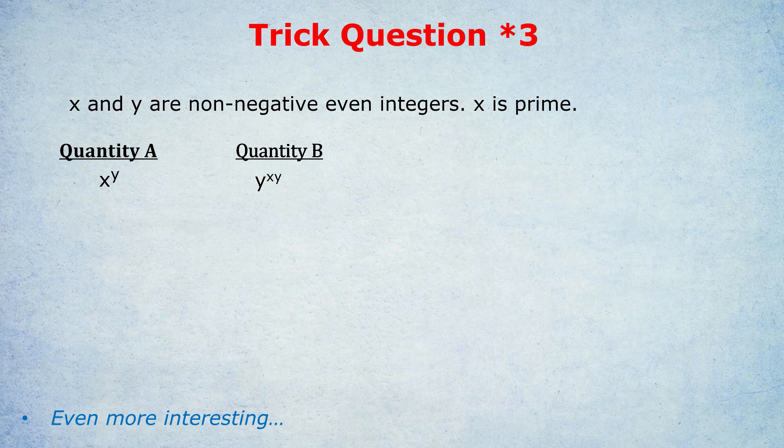A further part of the trick: if x is prime, x would have to be two. Two is the only even prime number, so we know for sure x is two. The trap is to think that y has to be two, four, or six, in which case quantity B is always bigger. Two to the power of two is definitely smaller than two to the power of four. Or if y was four, two to the power of four is definitely smaller than four to the power of eight. So in almost all examples, quantity B is bigger.